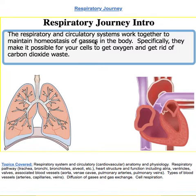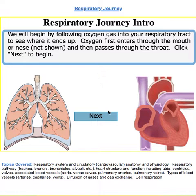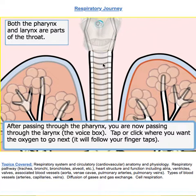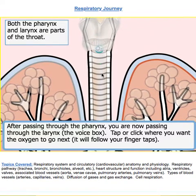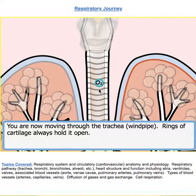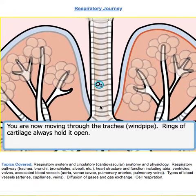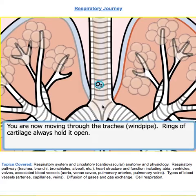The journey of gases. We have an oxygen molecule that's just entered the nose and gone down the throat, which we call the pharynx and the larynx. Now it's going to enter the trachea, which is this tube right here. It's made of cartilage, which keeps it rigid.